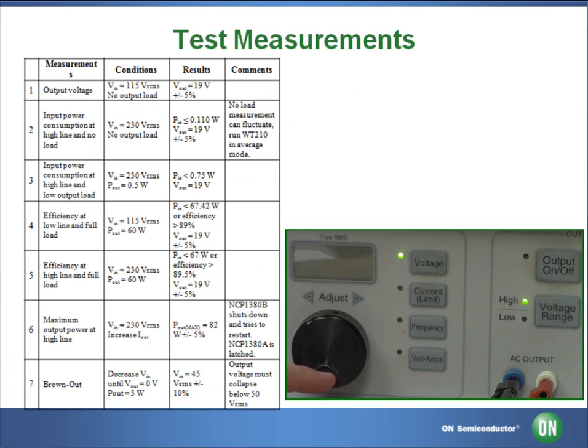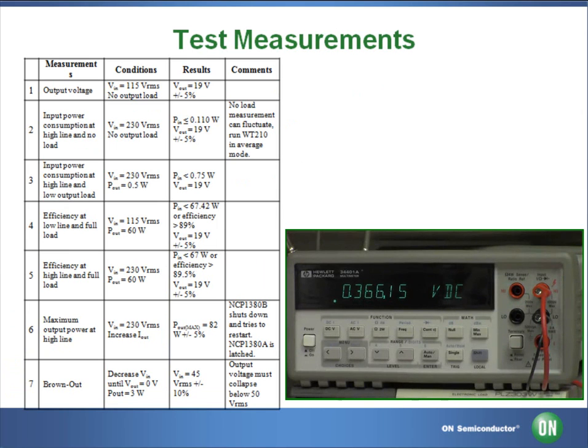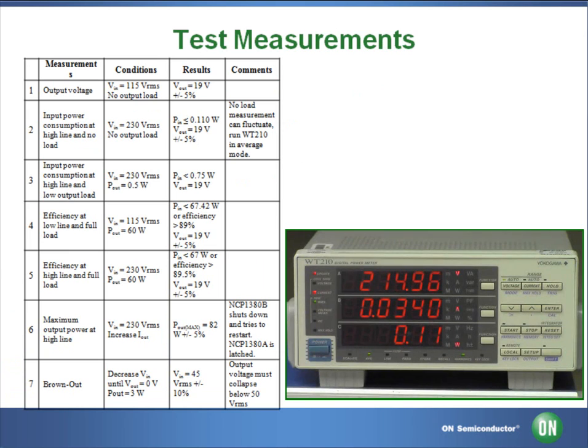To begin our test, we're going to make sure that our AC power source is set to 230 volts AC and turn it on. And here we can see that we have our approximate 19 volt output. And our quiescent input power is below 110 milliwatts.